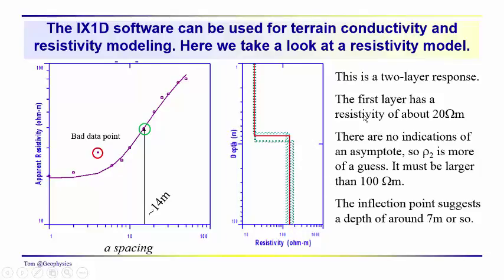So again, two-layer response. We don't see a sharp break. First layer has a resistivity of about 20 ohm meters. There are no indications of an asymptote here, but you know that it's got to keep on climbing. So it might be up here, so that's what I would usually do, would just say it's going to climb up and converge somewhere up here. That's going to make it more than 100. And the inflection point suggests a depth of around 7 meters.